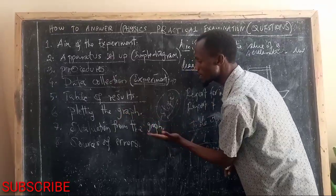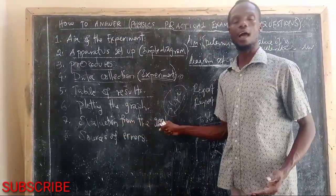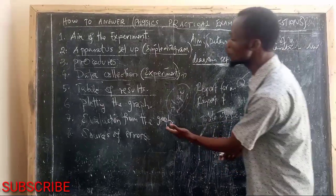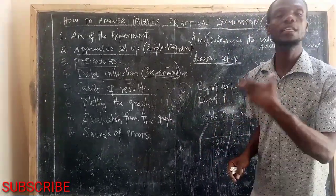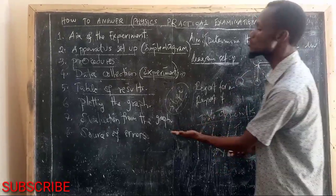the graph to determine the value of G. That is called evaluation from the graph. But also, you have to use to determine whatever the case. EMF, internal resistance, so forth. And that is all about it, called evaluation from the graph.